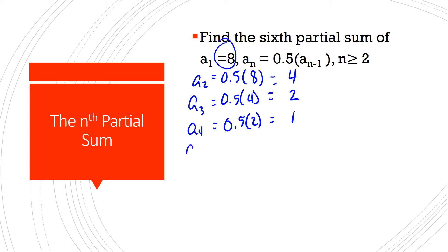And let's see, a5 is 1 half times 1, which is just going to be 0.5, or 1 half. And finally, a6 is equal to 0.5 times 0.5, which 1 half times 1 half is equal to 1 quarter, or 0.25.